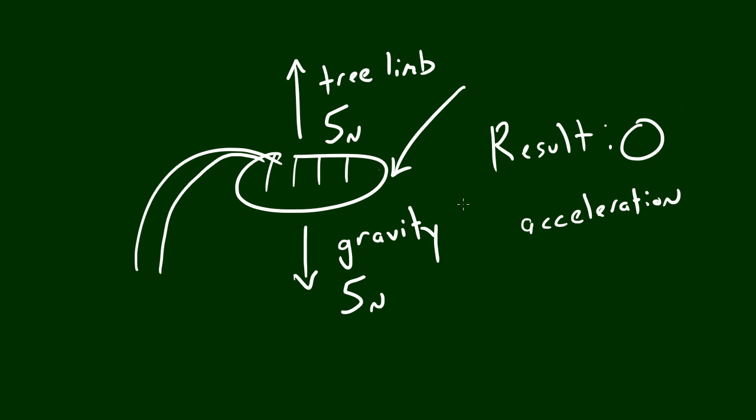A force pair is what happens when an object has two forces in opposite directions but of equal magnitude, causing zero acceleration. If we wanted to get rid of this force pair, we would take scissors and cut this tree limb, and then the watermelon would fall to the ground.